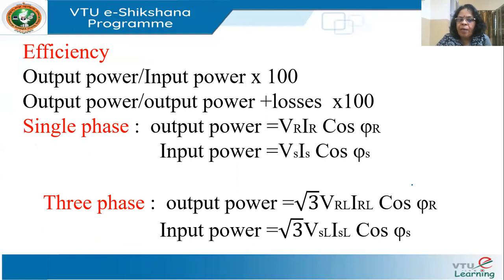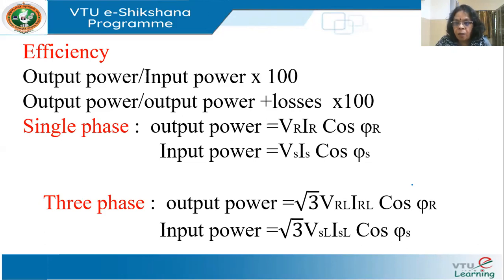Efficiency is output power divided by input power times 100, or equivalently output power divided by (output power + losses) times 100. Output power in single phase is VR·IR·cos φR and input power is VS·IS·cos φS. For three-phase using phase voltages, it would be three times VR·IR·cos φR. These power calculations were covered in the previous session.